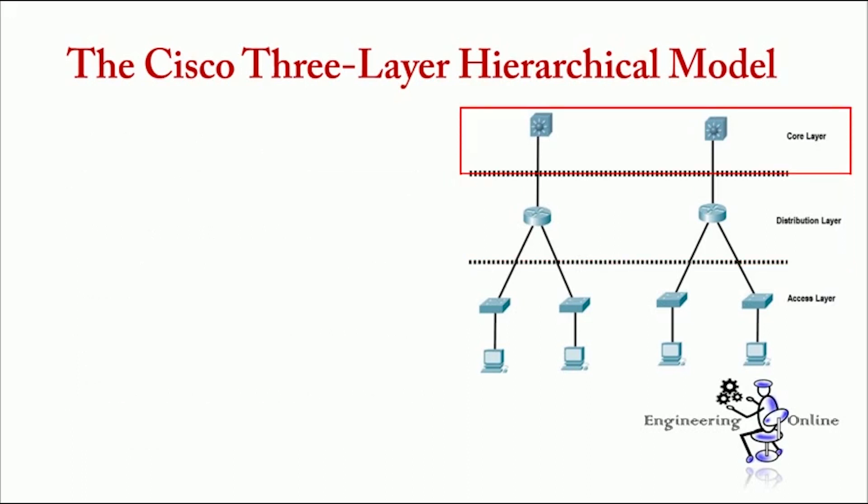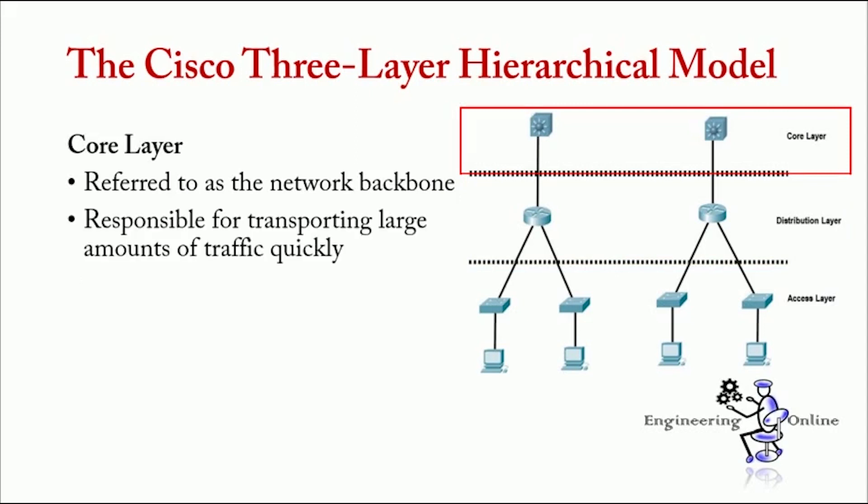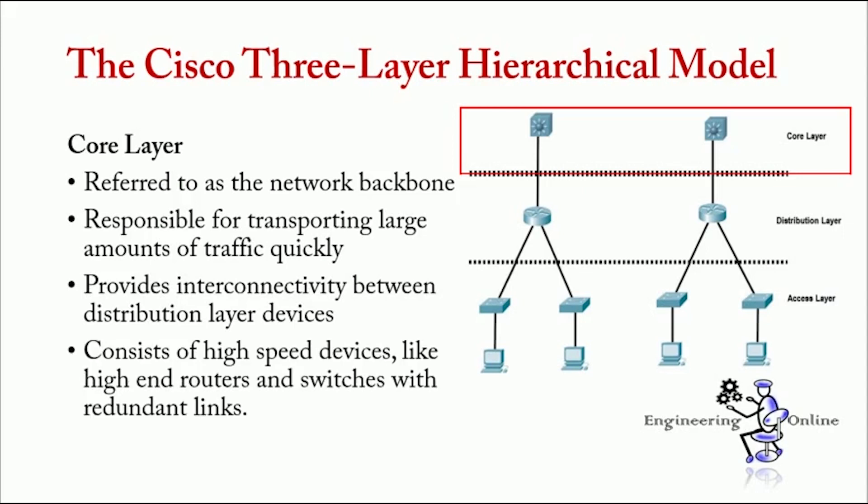Next, we have core layer. Core layer is also referred as a network backbone. This layer is responsible for transporting large amount of traffic quickly. This core layer provides interconnectivity between distribution layer devices. And it consists of high-speed devices like high-end routers and switches with the redundant links.